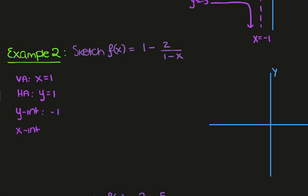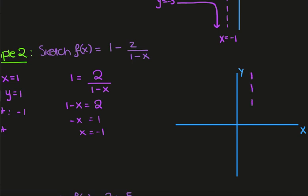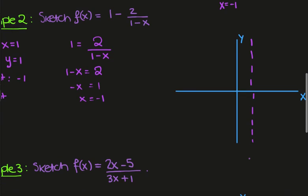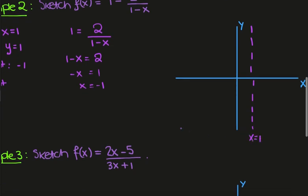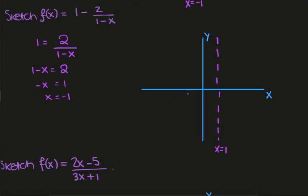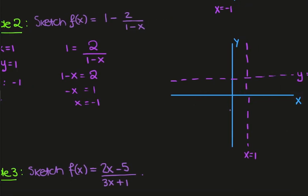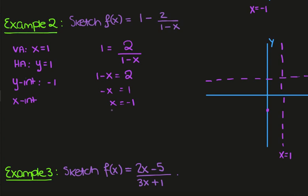The x intercept is given by setting the function equal to 0: 1 equals 2 over 1 minus x, so 1 minus x equals 2, meaning minus x equals 1, so x equals minus 1. Putting this into our graph, we have the vertical asymptote at x equals 1, the horizontal asymptote at y equals 1, the y intercept at minus 1, and the x intercept at minus 1.